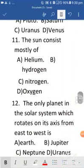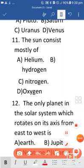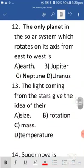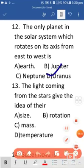Eleventh question is the sun consists mostly of, so the sun contains mostly that is hydrogen, that is hydrogen, option B. Next is the only planet in the solar system which rotates on its axis from east to west. So this is option D, Uranus. Let's check out, yeah.